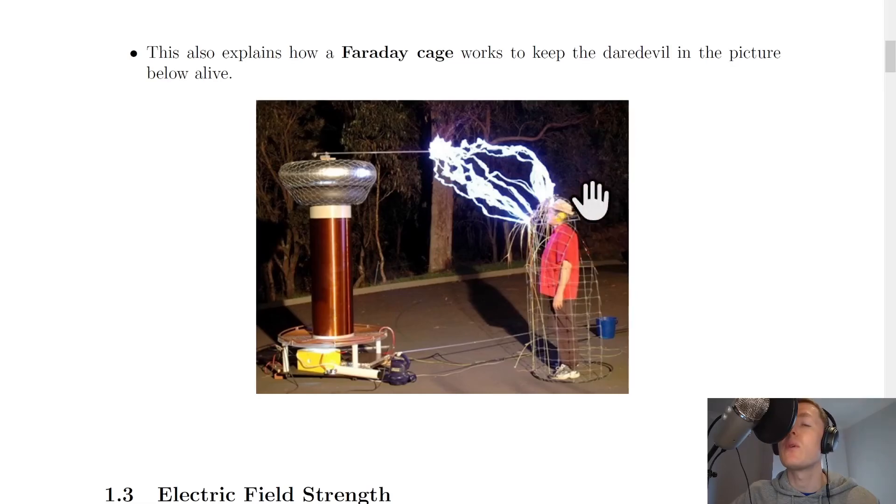A Faraday cage will allow the charge from the lightning to reside on the outer surface of the cage and not travel inside the cage. It will actually just pass down to the ground around the outsides of the cage. This means that the electric field inside the cage is zero, which means this guy is protected.